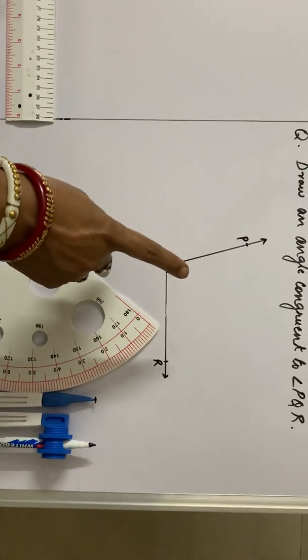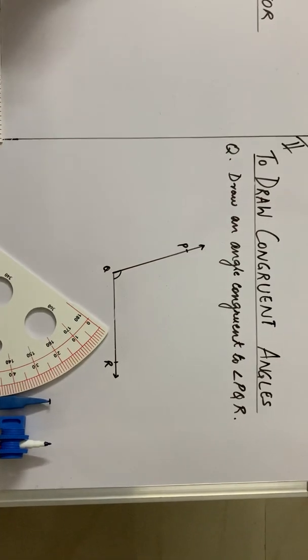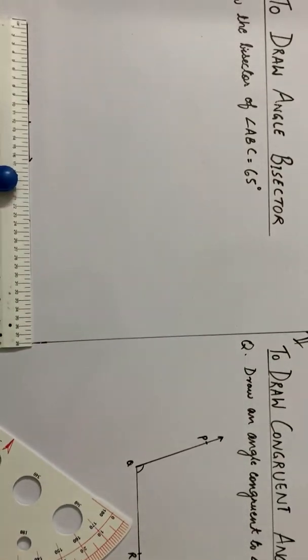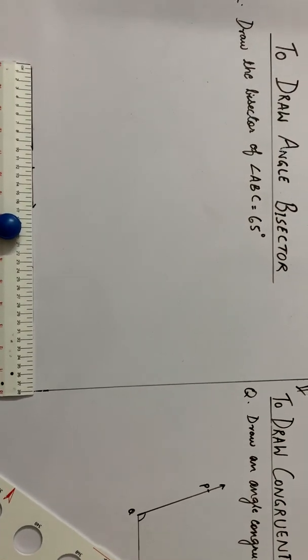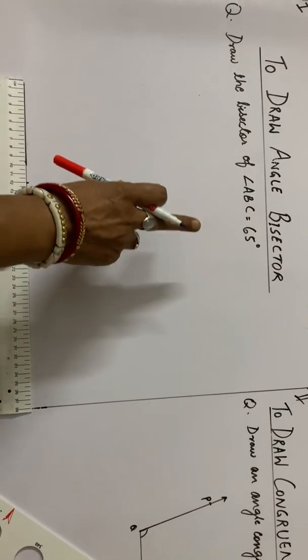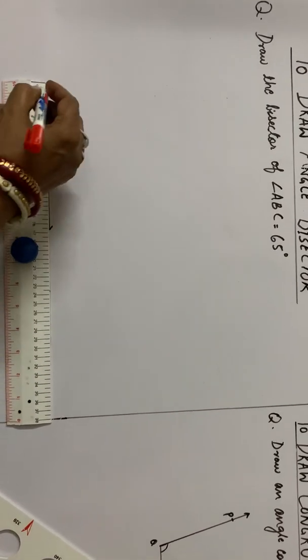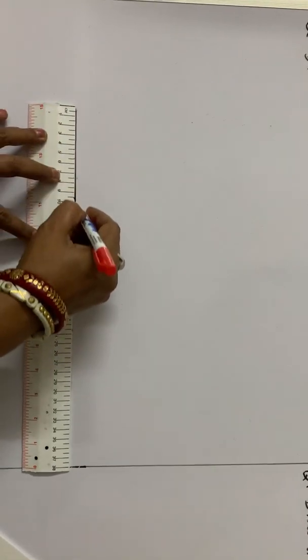Today, we will learn to draw congruent angles and to draw angle bisector. For that, first we will draw the angle. Let us consider an angle ABC equal to 65 degrees. So for drawing the angle, first we will draw a ray.